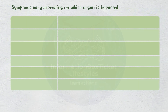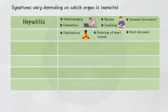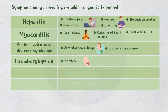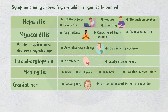Complication symptoms vary depending on which organ is impacted. Hepatomegaly, exhaustion, nausea, vomiting, and stomach discomfort are possible side effects of hepatitis. Palpitations, muffling of heart sounds, and chest discomfort are signs of myocarditis. Breathing too quickly or experiencing dyspnea are symptoms of acute respiratory distress syndrome. Thrombocytopenia can lead to nosebleeds and easily bruised areas. Meningitis symptoms include fever, stiff neck, headache, and impaired mental state. Lastly, facial palsy, or lack of movement in the face muscles, can result from cranial nerve palsy.